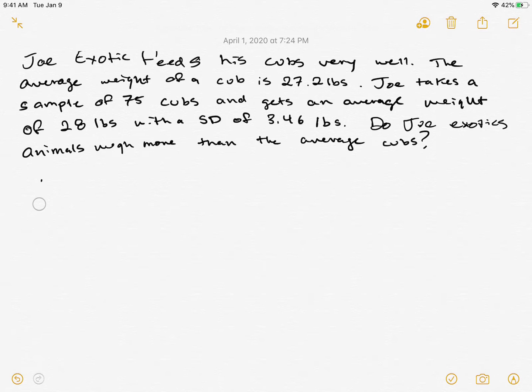So what we have here is a very appropriate problem about Joe Exotic. Joe Exotic feeds his cubs very well - he feeds them all the leftover Walmart steaks that he can find. The average weight of a cub in general, for the population, is 27.2 pounds. However, Joe takes a sample of 75 of his cubs and gets an average weight of 28 pounds with a standard deviation of 3.46 pounds. Do Joe Exotic's animals weigh more than the average cubs? We're going to do a hypothesis test here.